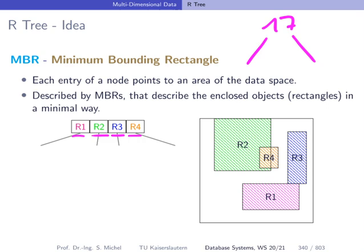Minimum bounding rectangle means that each of these rectangles — R1, R2, R3, R4 — contains the objects which are stored in the subtrees in a minimal way. For instance, in R1 maybe we have this rectangle here, this object here, and this one here. If R1 contains these three objects, then we indeed have R1 as a minimal bounding rectangle for these three objects. So it has to be minimal.